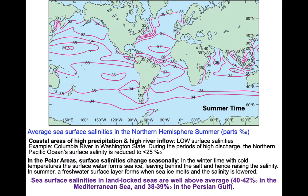Looking at this map carefully, the highest surface salinity is found in the Central Atlantic at 37 parts per thousand — the ocean desert because of high evaporation rates. That's the highest overall in the global ocean system. As you go into landlocked seas like the Mediterranean Sea or the Persian Gulf, seawater salinities can go up to 40–42%, extremely saline waters, because of high evaporation rates.